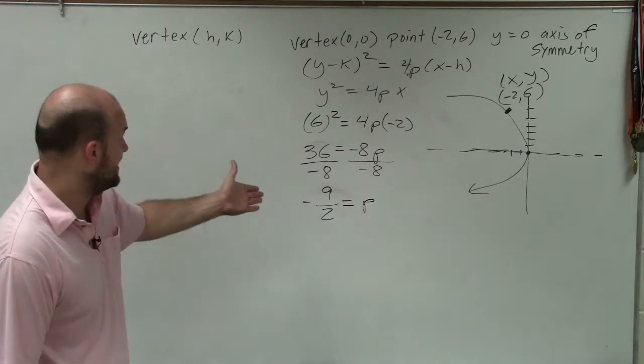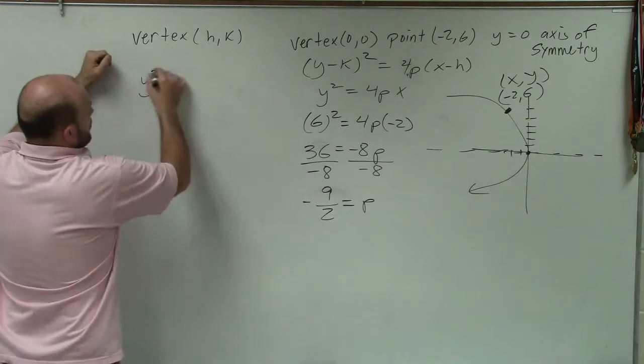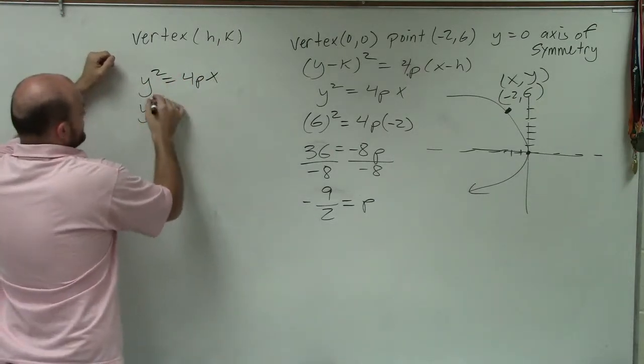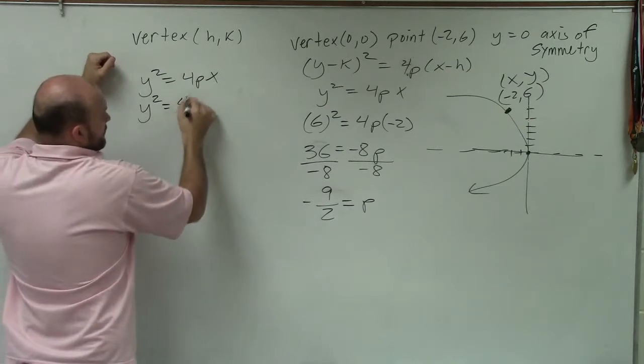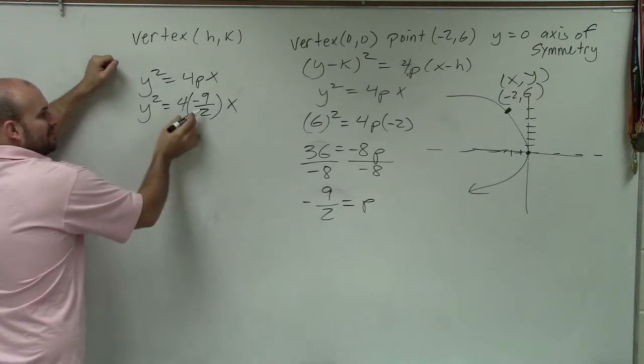So now negative 9 halves equals p. Going back to my equation, that's all I simply need to do is plug in for p. So I had y squared equals 4p times x. Well, now I know what p is. y squared equals 4 times negative 9 halves x.